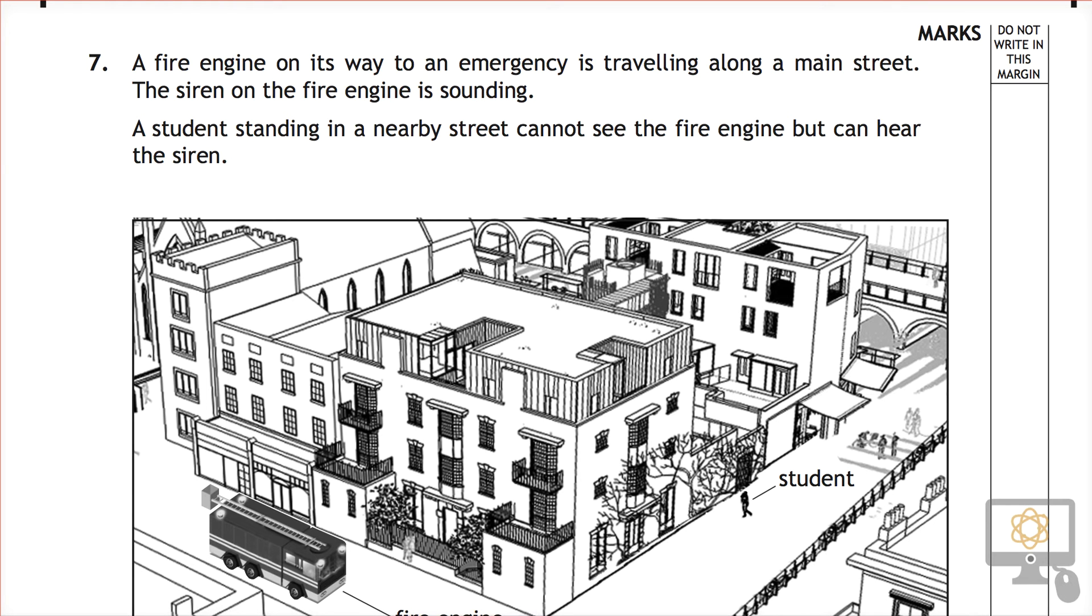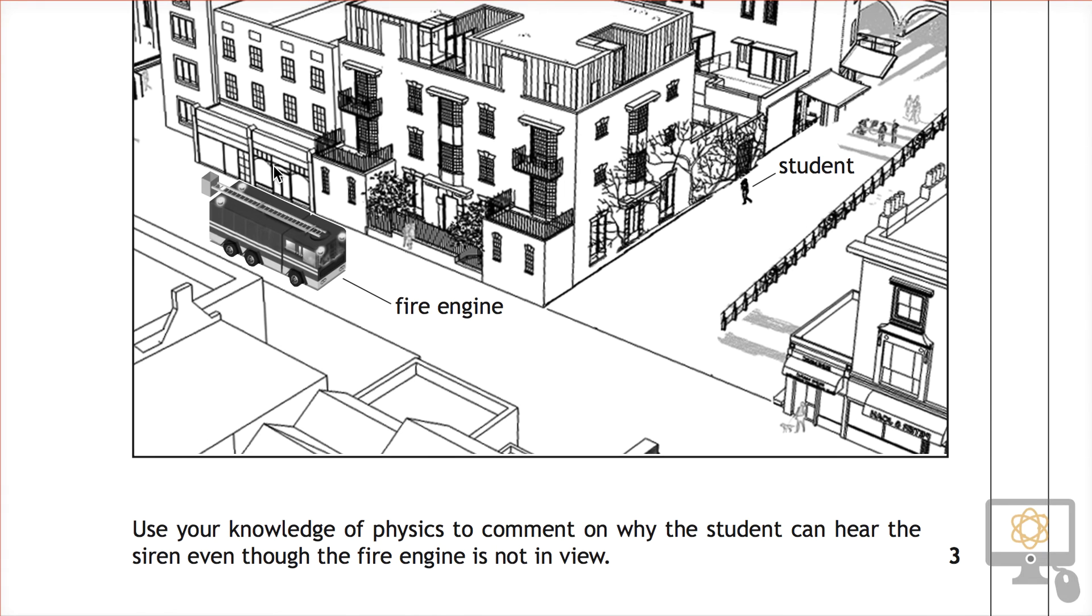The fire engine on its way to an emergency is traveling along a main street. The siren on the fire engine is sounding. A student standing on a nearby street cannot see the fire engine but can hear the siren. Here is the question: use your knowledge of physics to comment on why the student can hear the siren even though the fire engine is not in view.